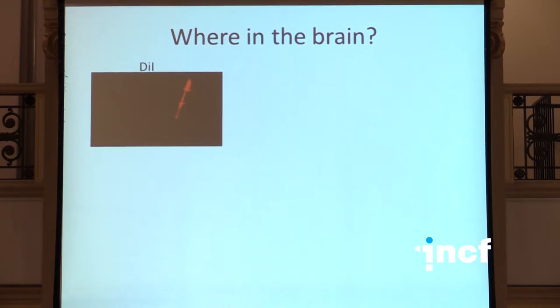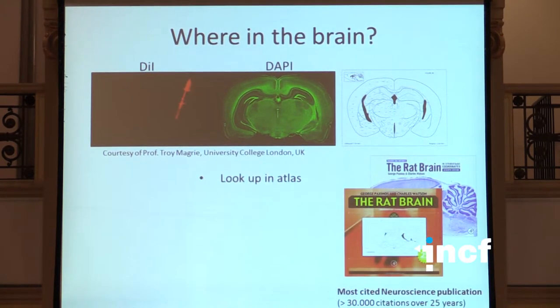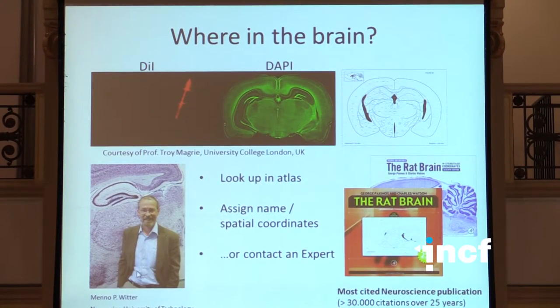This also goes for people doing electrophysiological recordings from the brain. Here we see a dye-labelled electrode tracked somewhere in the brain. If you get a DAPI-stained image from the same section you have some cytoarchitecture to navigate from, and basically what you have to do is look it up in an atlas. Brain atlases are very important for data interpretation — the rat brain in stereotaxic coordinates ranks as the most cited neuroscience publication with more than 30,000 citations over 25 years.